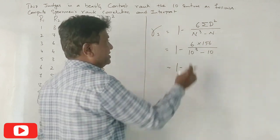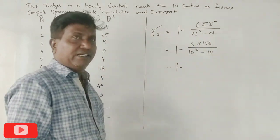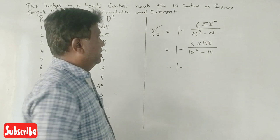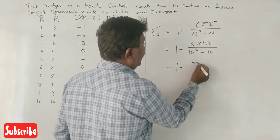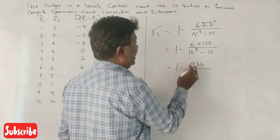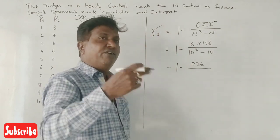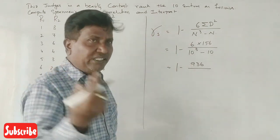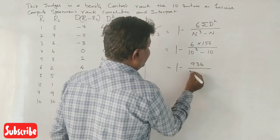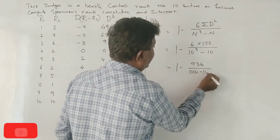Okay, 1 minus 6 into 156 equals 936, divided by 10 cubed which is 10 times 10 times 10, that's 1000. 1000 minus 10 is 990. So 936 divided by 990.